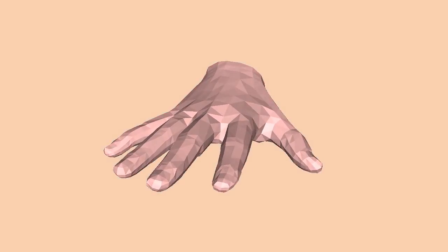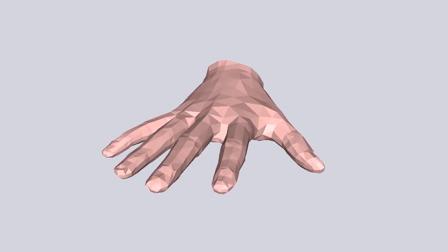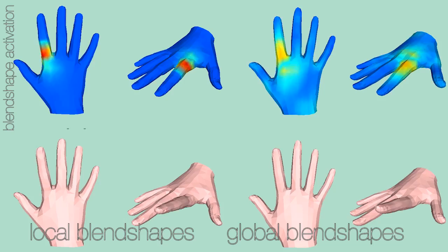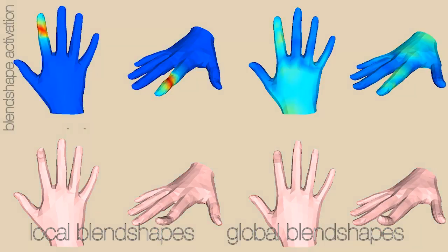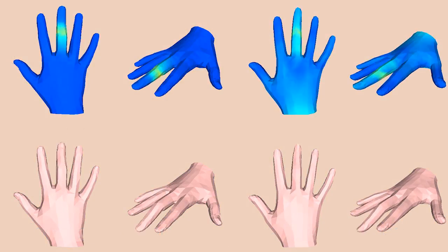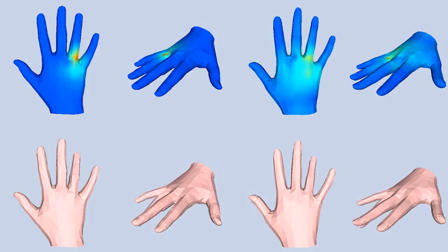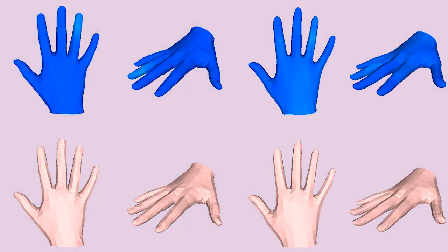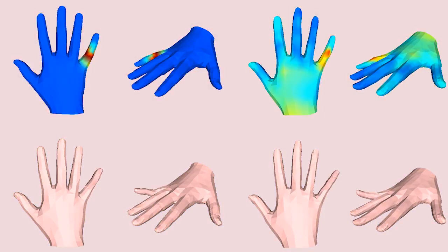Hand shape across the population is represented by a linear subspace of shape blend shapes computed with principal component analysis. To capture how hand shape varies with pose, we learn corrective blend shapes that are a function of the articulated pose of the hand. These pose blend shapes deform the template so that when it is posed it approximates the training scans.